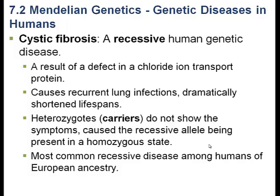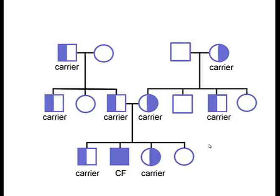Gene therapy probably offers the best hope of a cure, and we will eventually discuss gene therapy in this class, but it hasn't been perfected or made widely available yet. This is a recessive autosomal disorder. Here we have a short pedigree showing the movement of this gene from one generation to the next. In the first generation, among these couples, only one is a carrier. As long as that's true, there will be no individuals in the offspring with cystic fibrosis — though there will be carriers. If the recessive allele is passed on, the individual becomes a carrier, as depicted here.